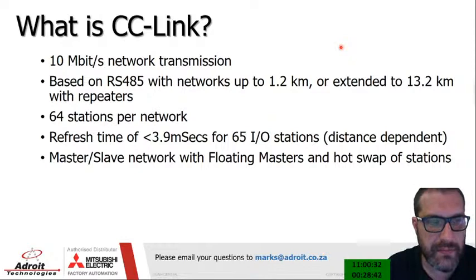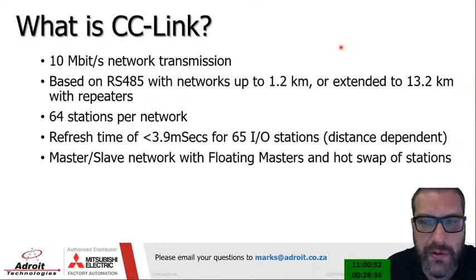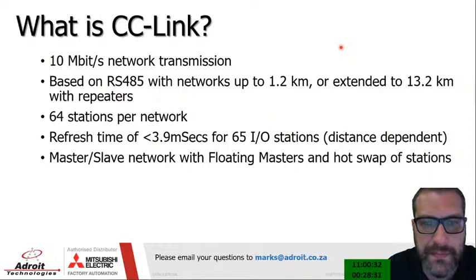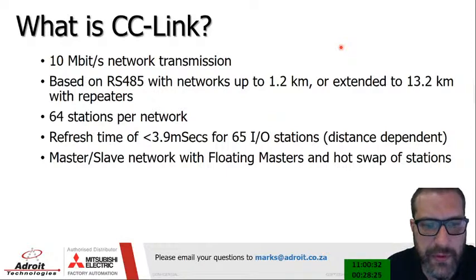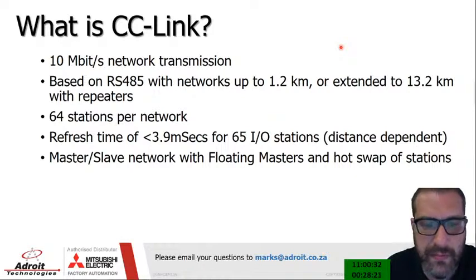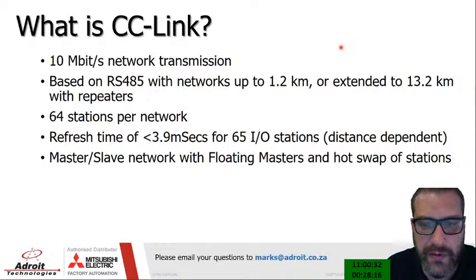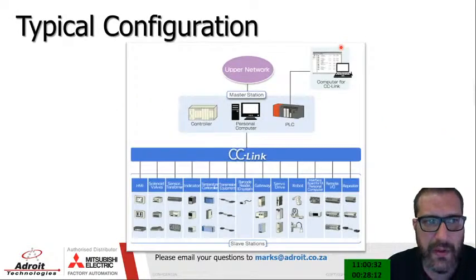CC Link is a 10 megabit network transmission based on RS-485, with networks up to 1.2 kilometers, or extendable up to 13 kilometers with repeaters. You can have up to 64 stations per network. The refresh time is less than 3.9 milliseconds for 65 IO stations, which is relatively fast. It's a master-slave network with floating masters and hot swap at stations.